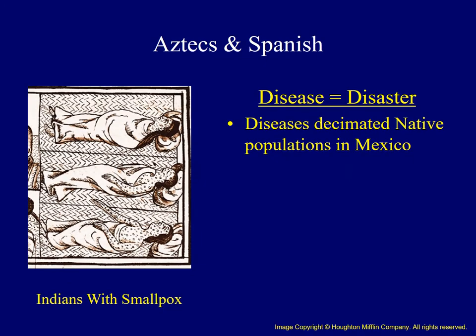The disaster came in the form of disease — in this case, smallpox. This was probably the biggest factor which seriously weakened the Aztecs and led to their defeat. Estimates differ among various historians, but what's clear is that Native American populations were devastated by diseases brought by Europeans.